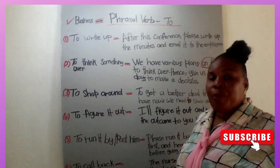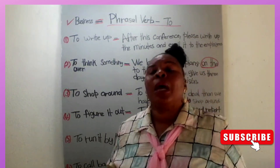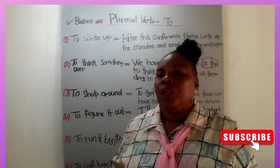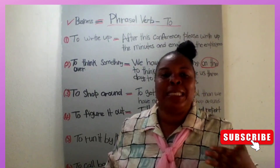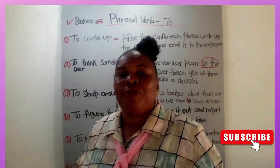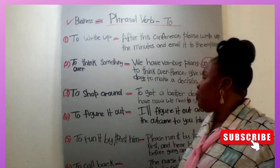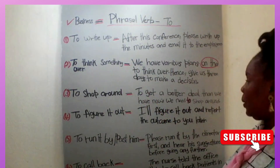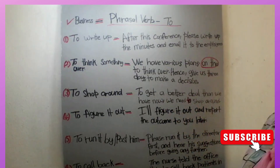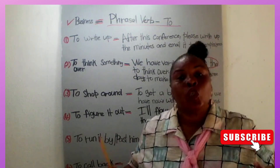Number three: to shop around. Sometimes you need to shop around because you have various prices. You want to buy supplies for your store, your shop, or your office — toilet paper, staples — and some places have it at $200, some at $150, some at $100. So you shop around to get the best price. In a sentence: 'To get a better deal than we have now, we need to shop around.'